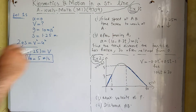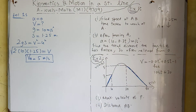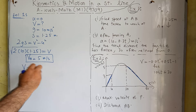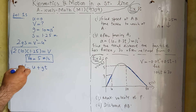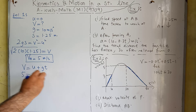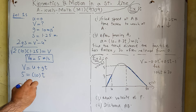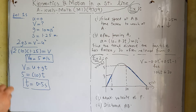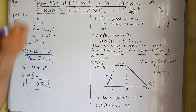Now we need to find the time taken to reach point A. Using the equation v = u + at, the final velocity is 5, the initial velocity is 0, and the acceleration is 10. Solving, the time is equal to 0.5 seconds.